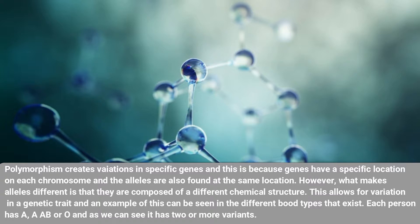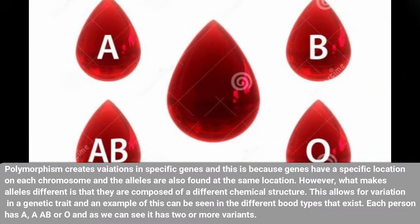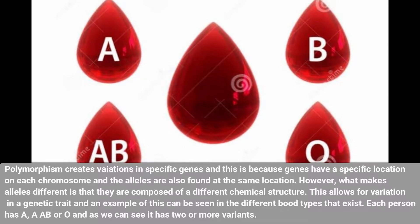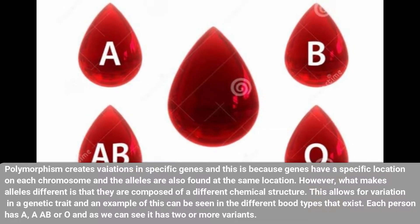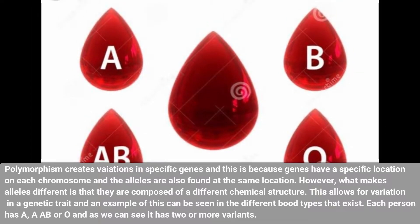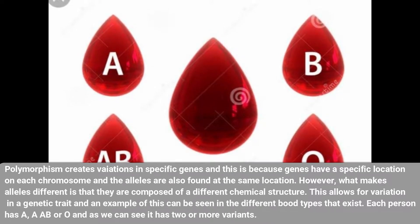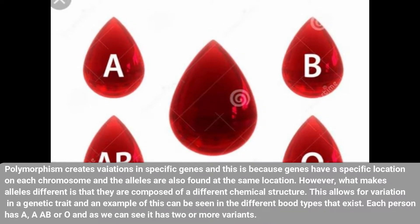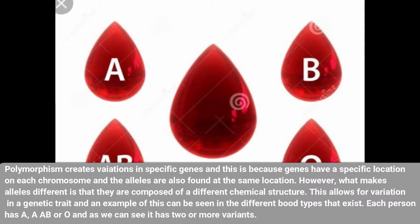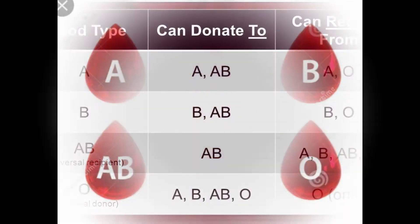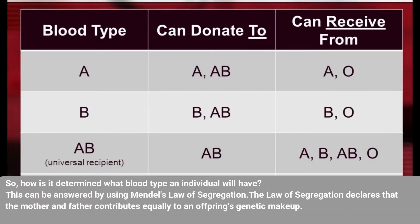An example of polymorphism can be seen in the different blood types that exist. Each person has one of the four blood types — A, B, AB, or O — and as we can see, there are two or more variants. But how is it determined what blood type an individual will have?